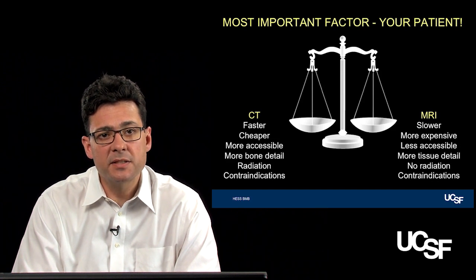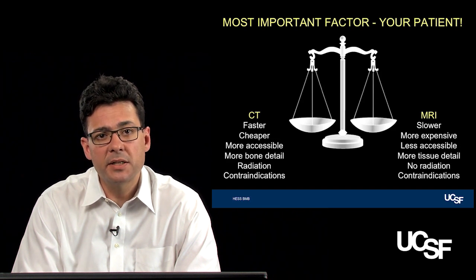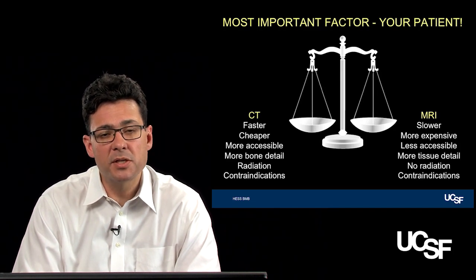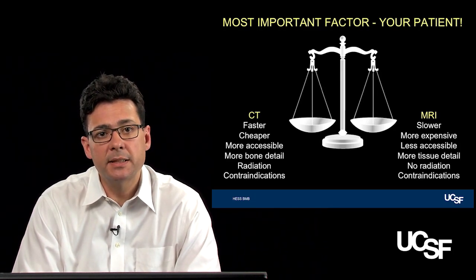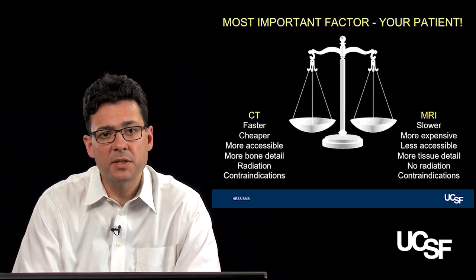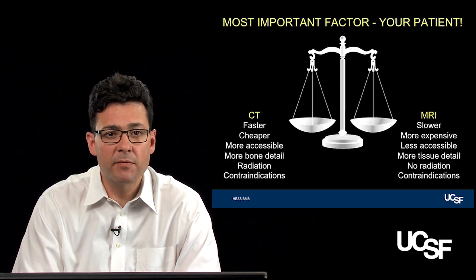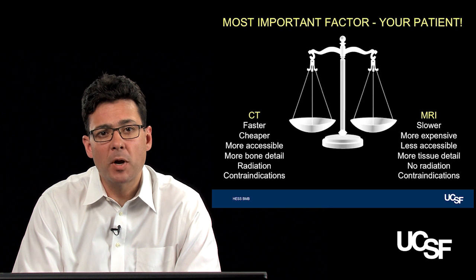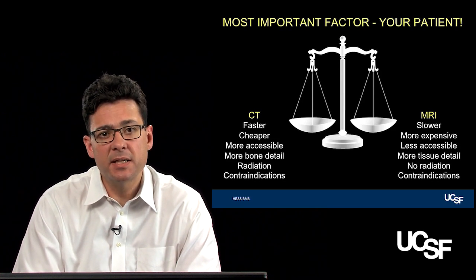CT is much faster than MRI — it can be acquired in seconds. It's cheaper, cheaper billed to insurance, and probably cheaper for the patient as well. It's more accessible because it can be performed faster. Virtually every hospital and certainly every emergency room has a CT scanner, whereas MRI remains a relatively scarce resource. When thinking about clinical indications, CT really shows bone much better than MRI does.